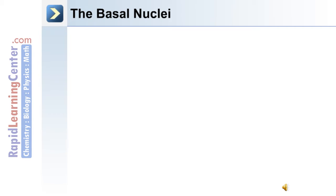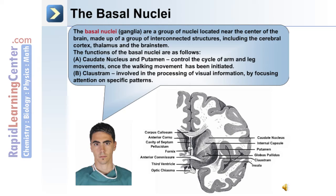Deep within the brain are the basal nuclei, or ganglia — nuclei located near the center of the brain, made up of interconnected structures including the cerebral cortex, the thalamus, and the brain stem. The caudate nucleus and the putamen control the cycle of arm and leg movements once walking has been initiated. The claustrum is involved in processing visual information by focusing attention on specific patterns.